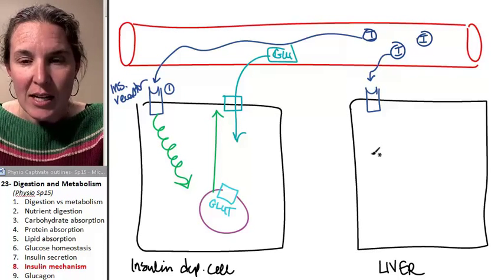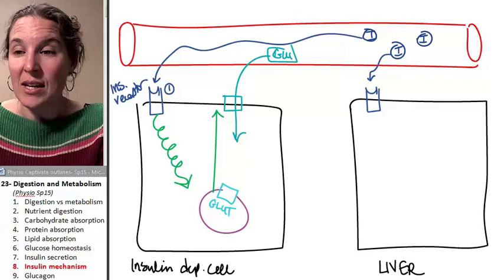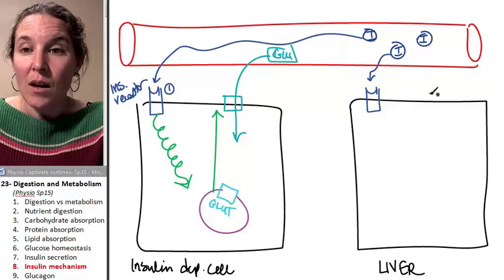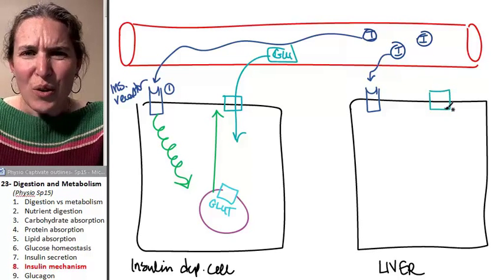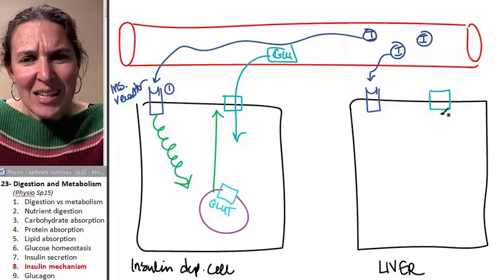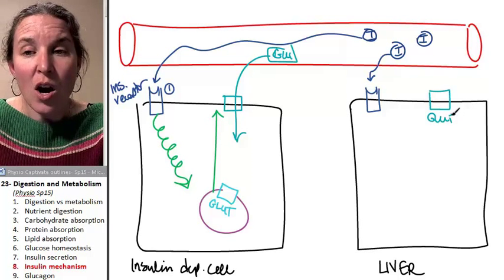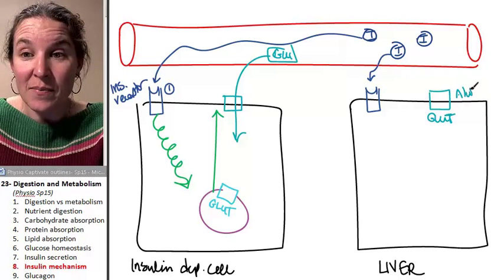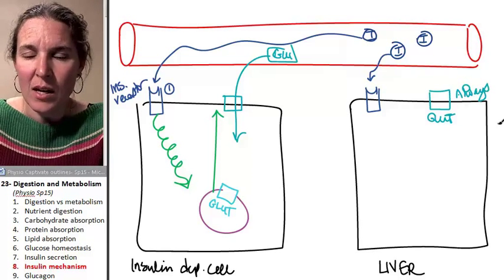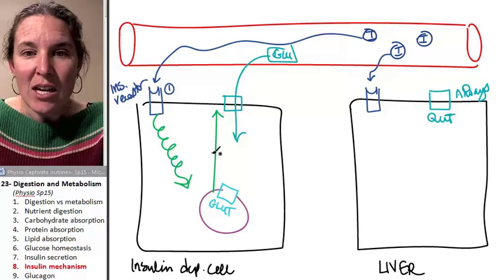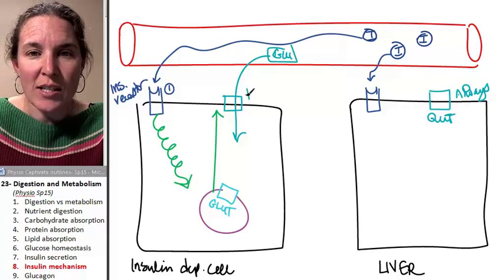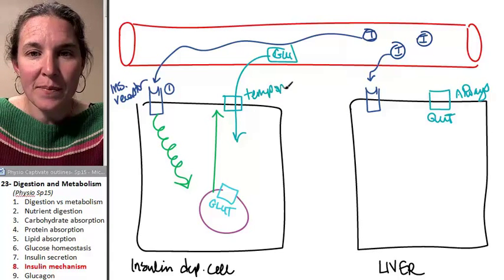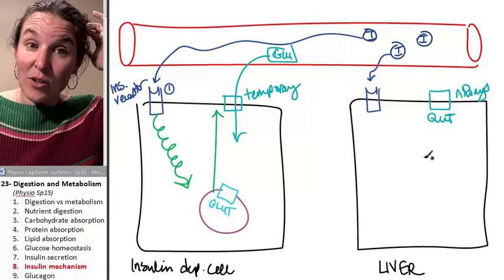The liver is different because the liver requires us to store the glucose. So GLUT transporters are chronically in liver cells always. They're always there. Here, the GLUT transporters are temporary. In the liver, they're always there.